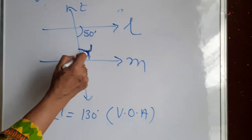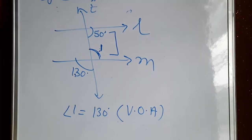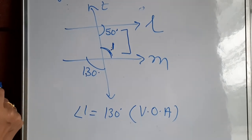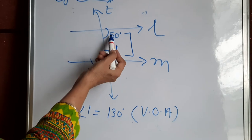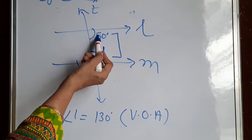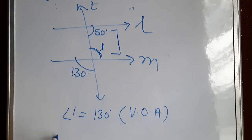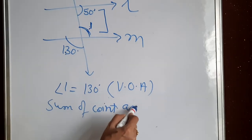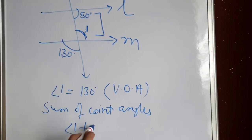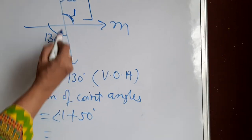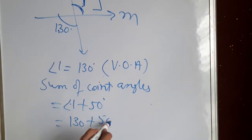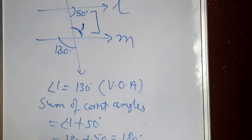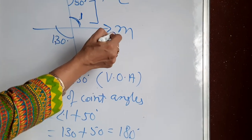Now angle 1 and the 50-degree angle are co-interior angles. The sum of co-interior angles must be 180 degrees if the lines are parallel. Doing the sum: angle 1 plus 50 equals 130 plus 50 equals 180 degrees. The angles are supplementary, which means the lines are parallel.